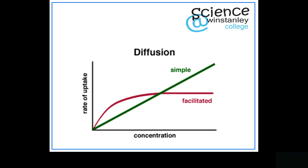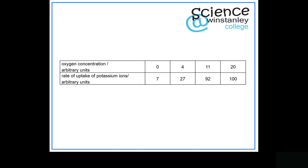Another example comes from a table taken from an exam paper. The top row shows oxygen concentration — zero, four, eleven, twenty units — and the bottom row shows the rate of uptake of potassium ions: seven, twenty-seven, ninety-two, and one hundred units. As the concentration of oxygen increases, the rate of uptake of potassium ions also increases. Oxygen is required to make ATP, and ATP is used by active transport, so this links directly to active transport.